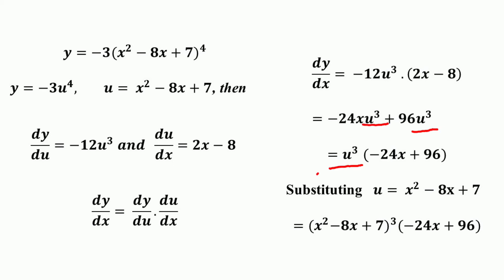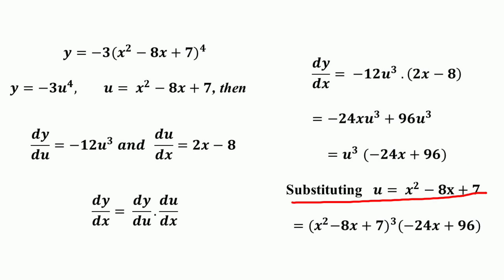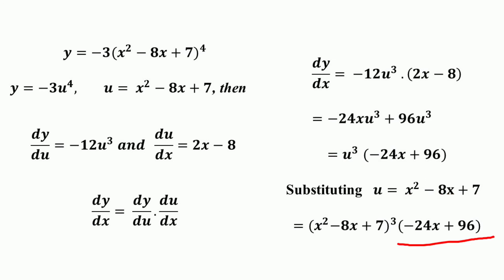Here u³ is common, so taking it outside gives u³ into (-24x + 96). Since u equals x² - 8x + 7, substituting the value of u gives (x² - 8x + 7)³ into (-24x + 96).